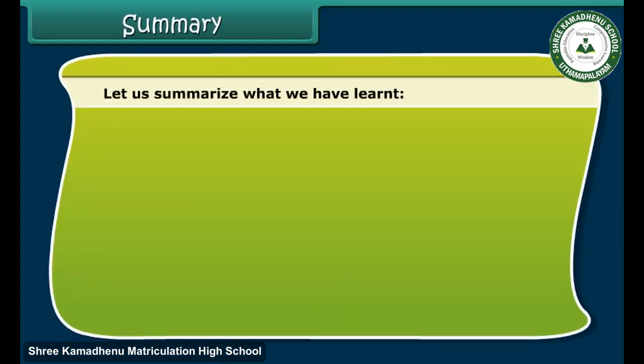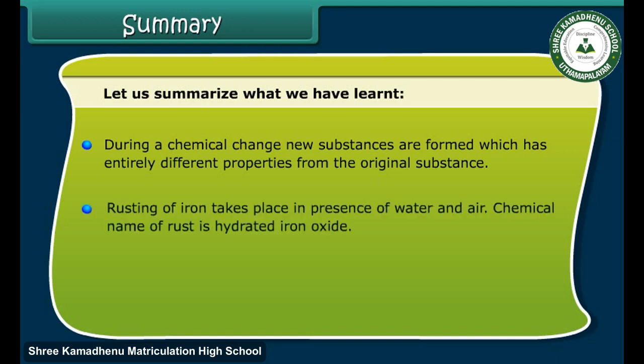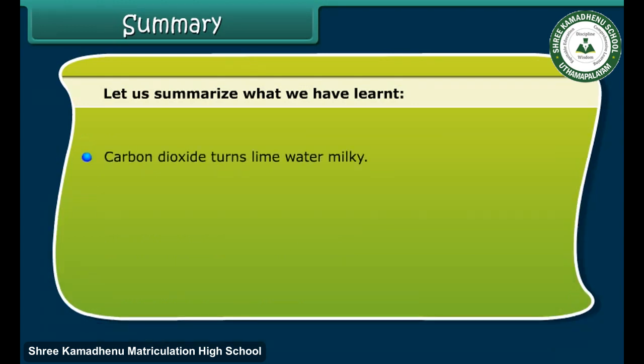Summary: During a chemical change, new substances are formed which have entirely different properties from the original substance. Rusting of iron takes place in the presence of water and air; the chemical name of rust is hydrated iron oxide. On dissolution of magnesium oxide in water, magnesium hydroxide is formed, which is basic in nature. Carbon dioxide turns lime water milky.